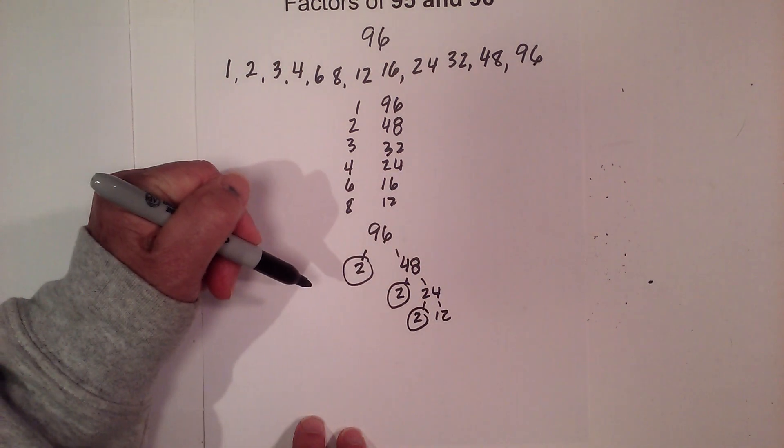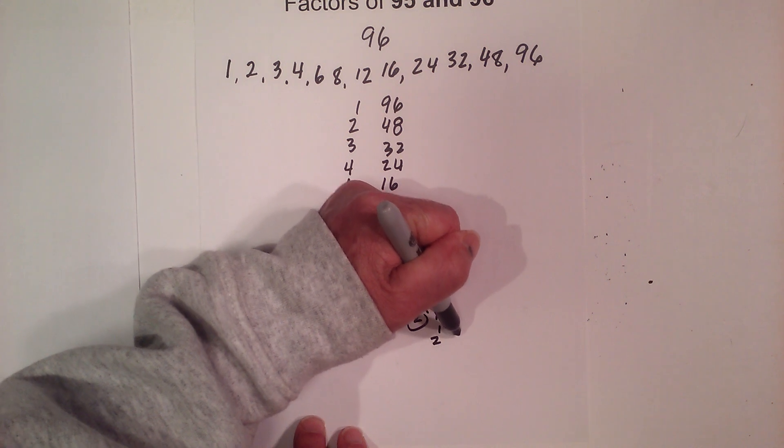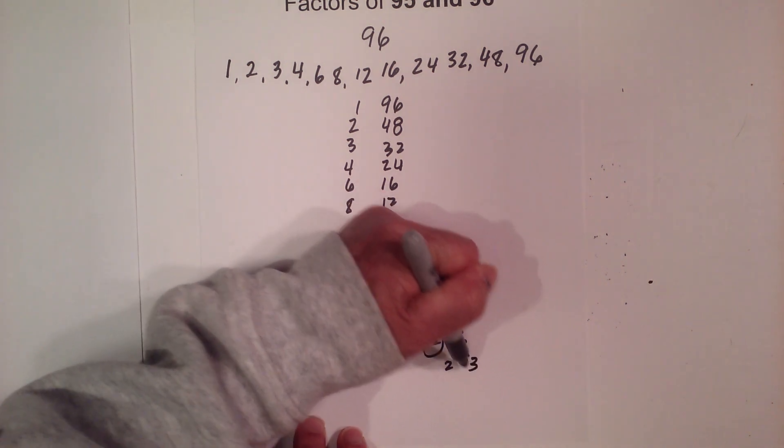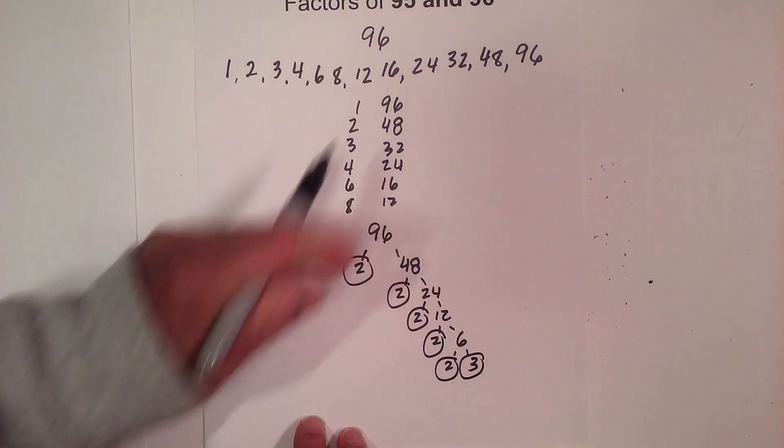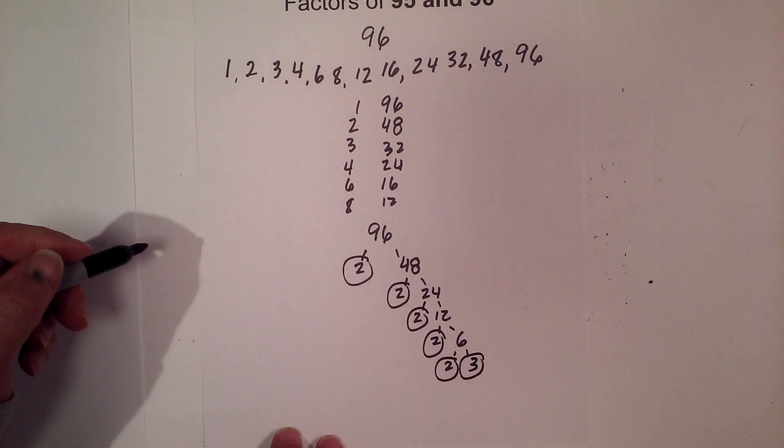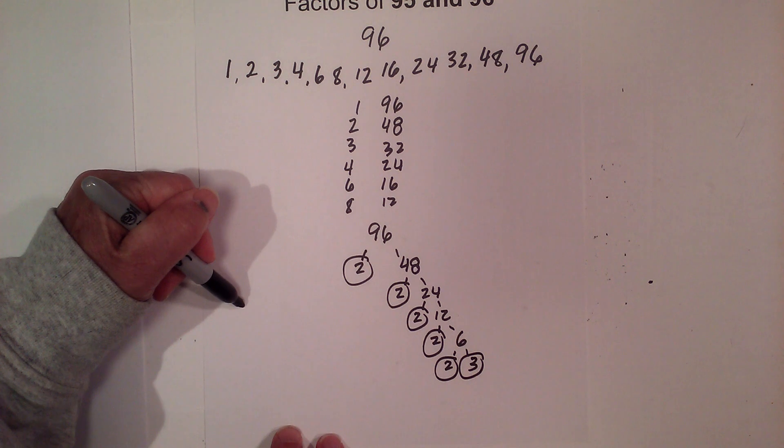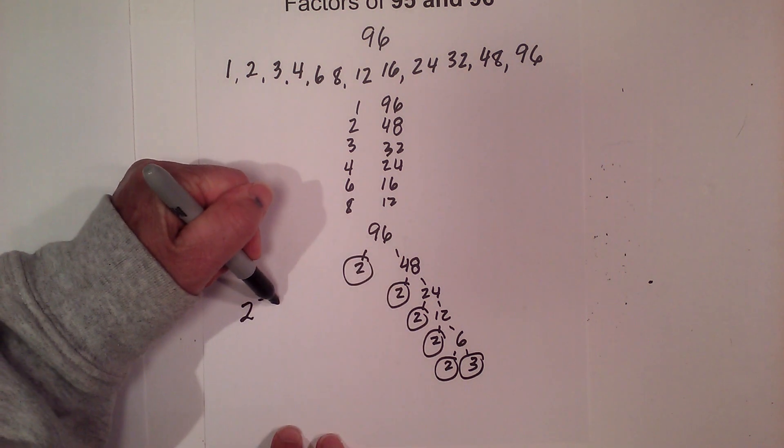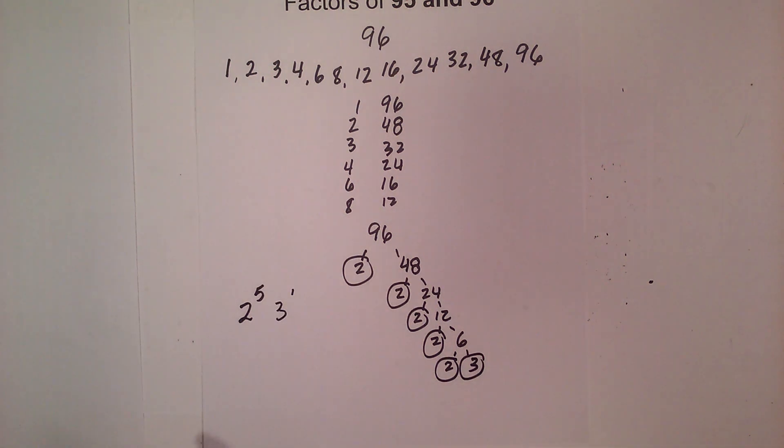Again, circle the 2, it is prime. And 2 times 6, and then 2 times 3. And now we're down to just prime numbers. So the prime factors are 2 to the 5th, because there's 1, 2, 3, 4, 5 twos, and 3 to the 1st.